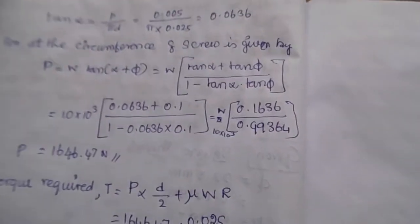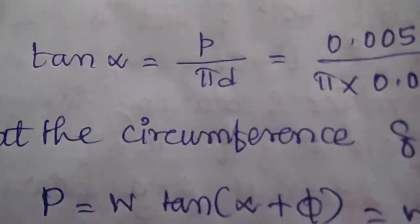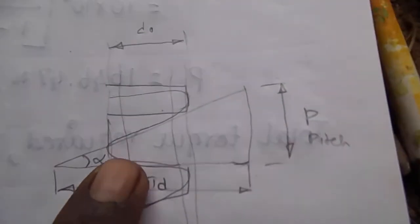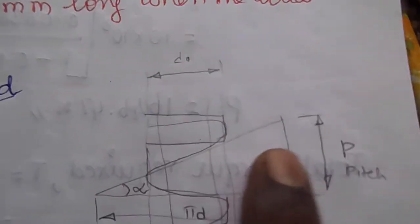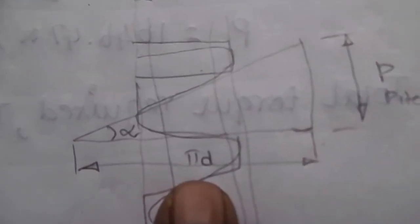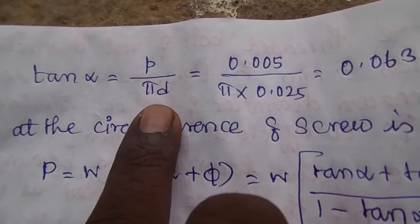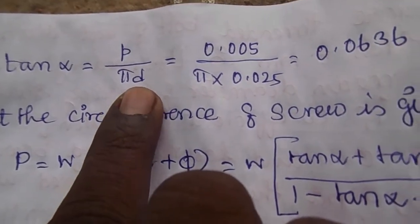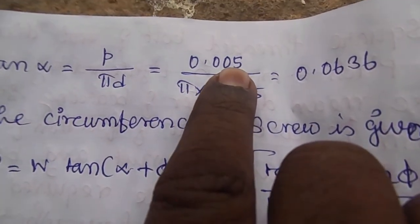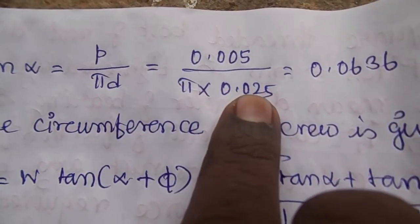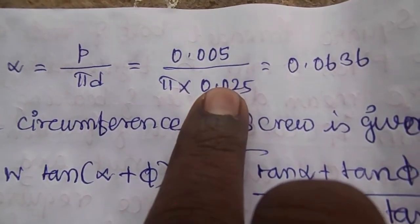Next, we calculate alpha, the helix angle. The formula is tan alpha equals pitch divided by pi times D, where the opposite is pitch and the adjacent is pi D. So, tan alpha equals P divided by pi D. P is 0.005 m and the mean diameter D is 25 mm, that is 0.025 m.